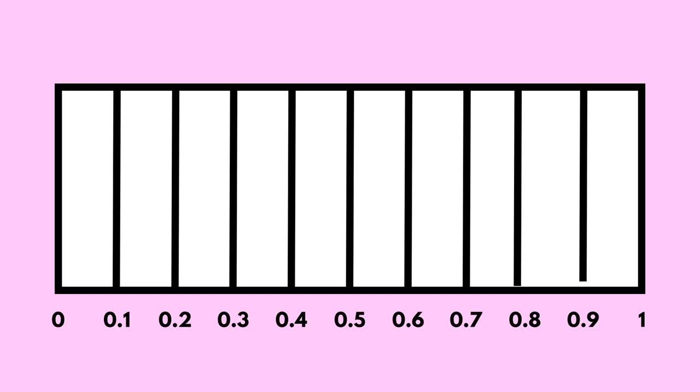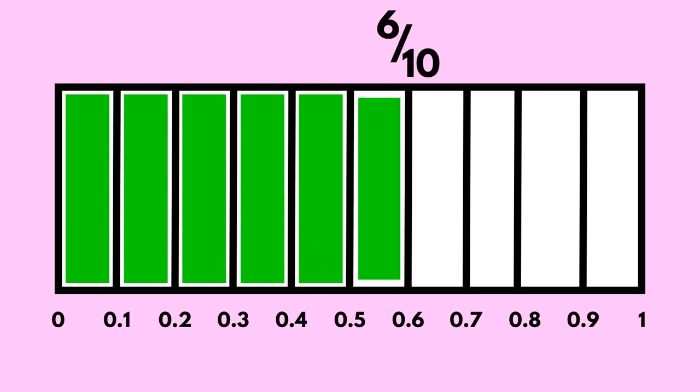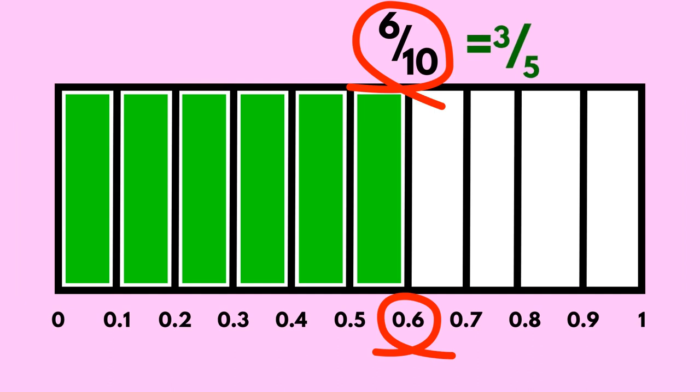We can now take our bar model and put a decimal number line onto it. Understanding how the decimal number line works and drawing bar models for fractions can really help when converting between fractions and decimals.